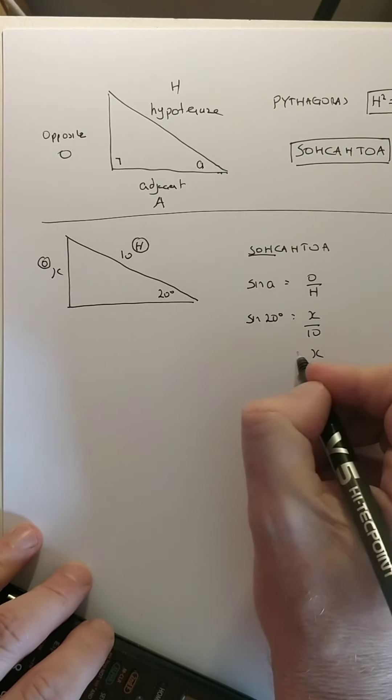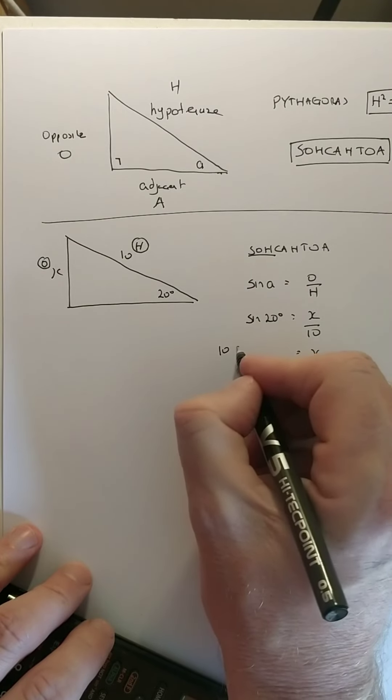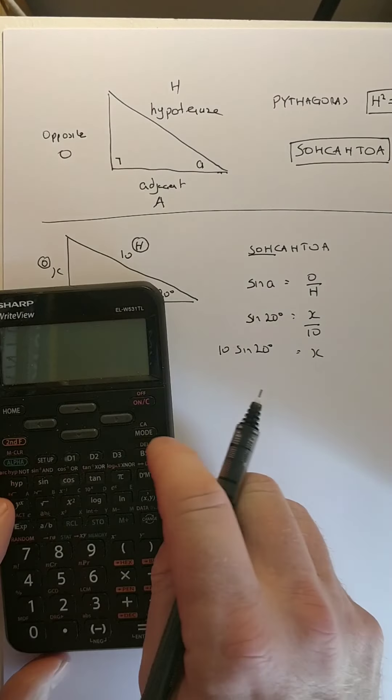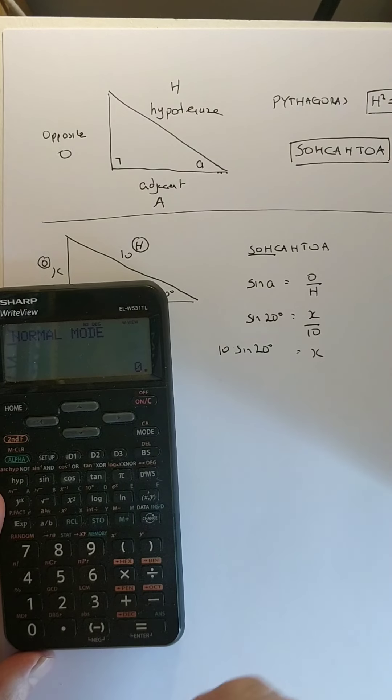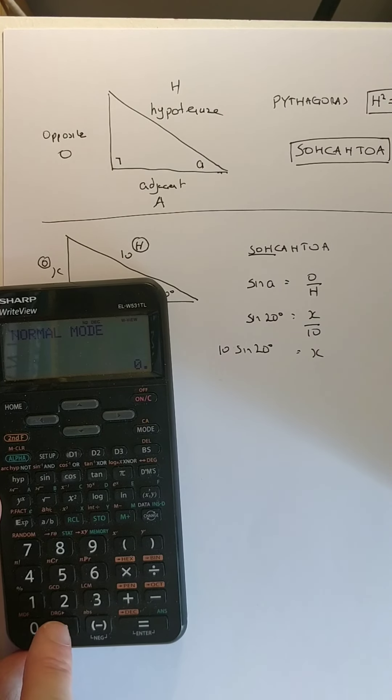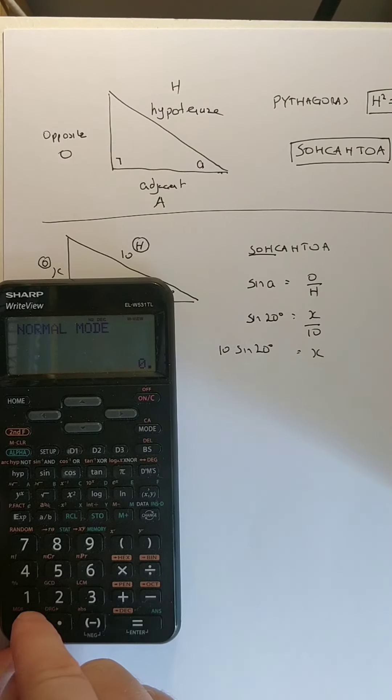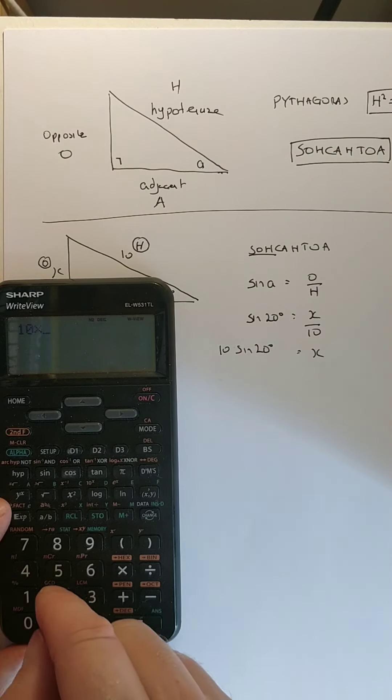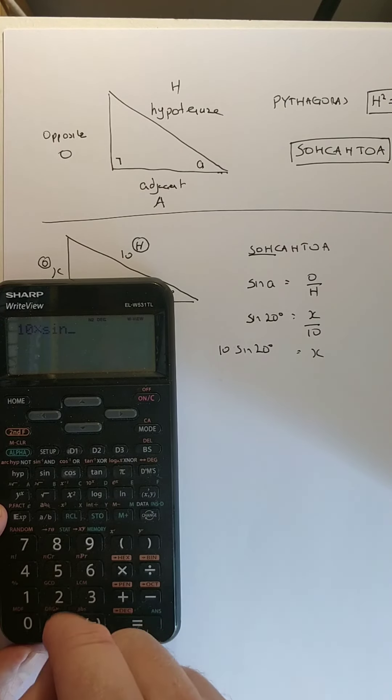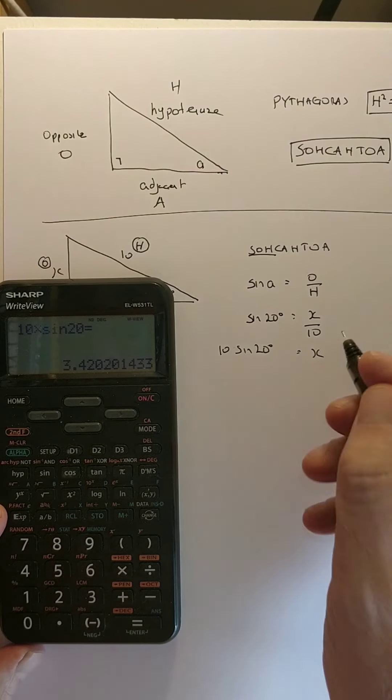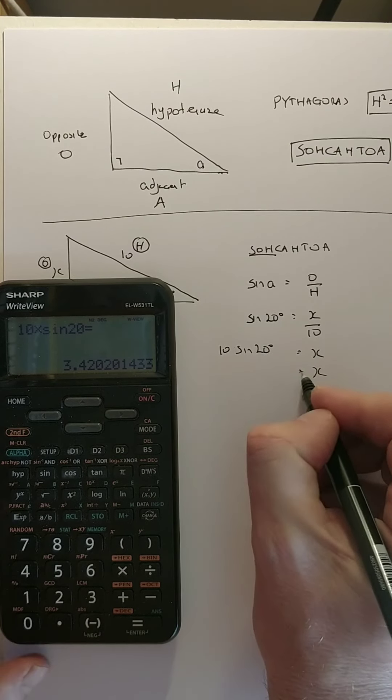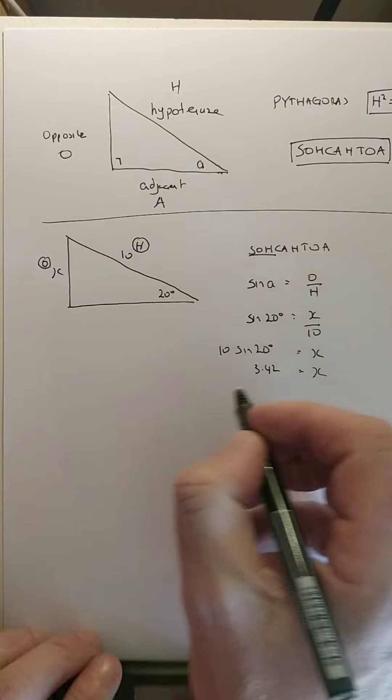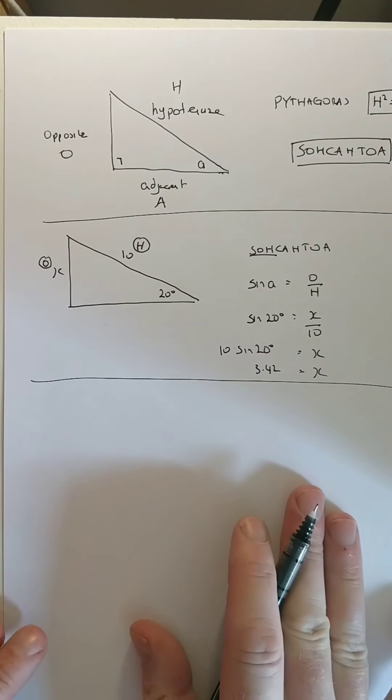You write that down and then you fill it in. So, sine of 20 equals X over 10. You want X on its own, so the 10 is dividing, goes across as multiplying, 10 times the sine of 20. Calculator, make sure you're in degrees. If you're not, you have an orange and a DRG down here, but make sure you're in degrees. You should be 10 multiplied by sine of 20. And we get an answer of 3.42. And we're done. So, straightforward enough.